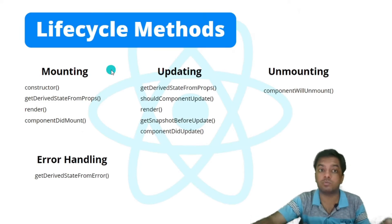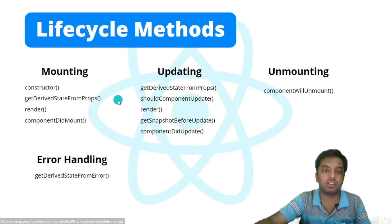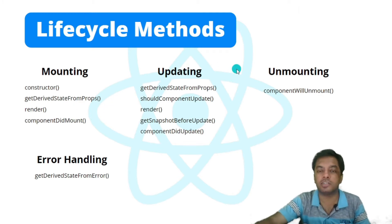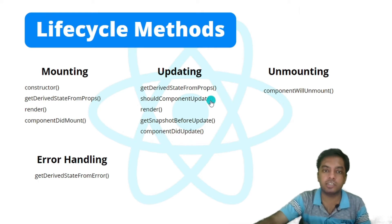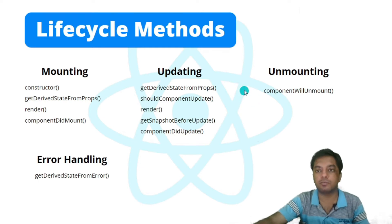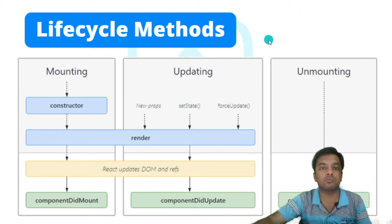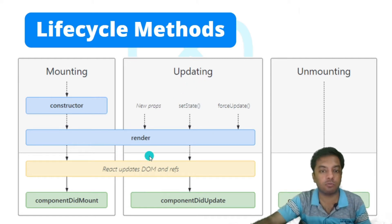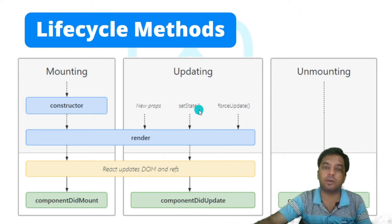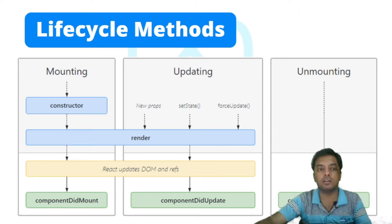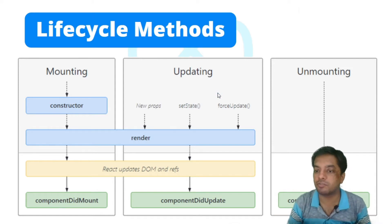In the mounting phase, there are four methods: constructor, getDerivedStateFromProps, render, and componentDidMount. In the updating phase, there are five: getDerivedStateFromProps, shouldComponentUpdate, render, getSnapshotBeforeUpdate, and componentDidUpdate. In the unmounting phase, there is componentWillUnmount. In the error handling phase, there is getDerivedStateFromError. Some other lifecycle methods exist but are not commonly used, so they are not represented in the standard diagram.